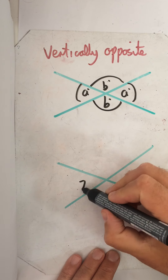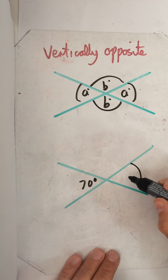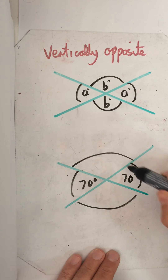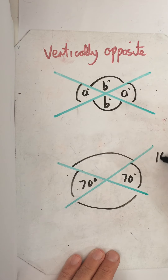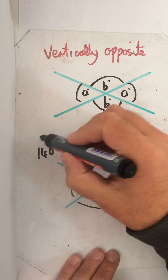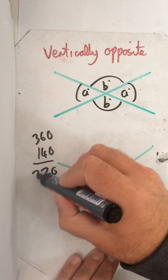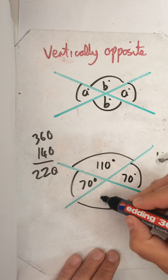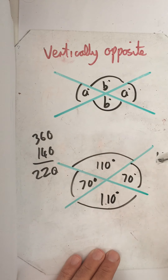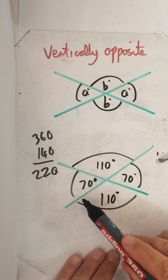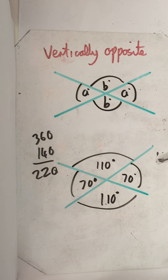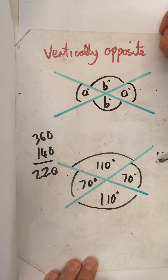So if this is 70 degrees here, we know that this angle here will also be 70 degrees. We can work out the other two angles because we know all the way around is 360. So these two come to 140 degrees. Take that away from 360, we've got 220 degrees, and we can share those out — so this would be 110 because it's a vertically opposite angle, 110. They both add up to 360, and we've got angles on a straight line equal 180. So that's vertically opposite angles — really straightforward.